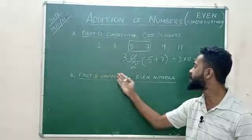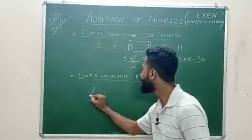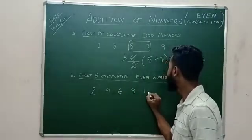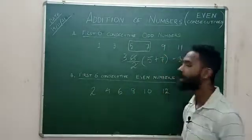Similarly, the first six consecutive even numbers are two, four, six, eight, ten and twelve.